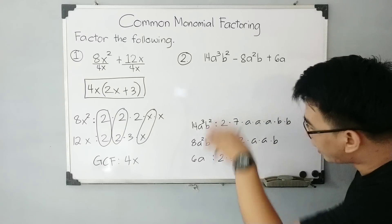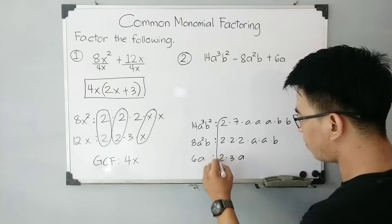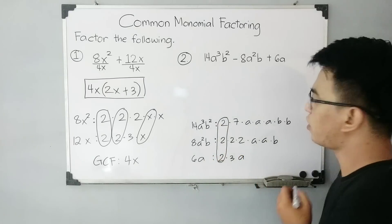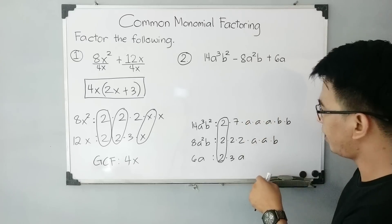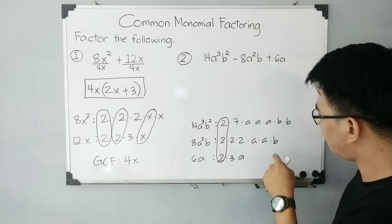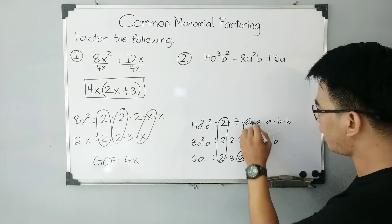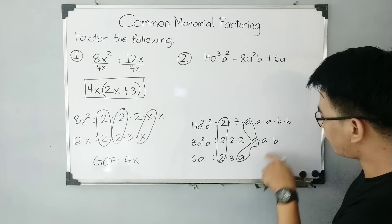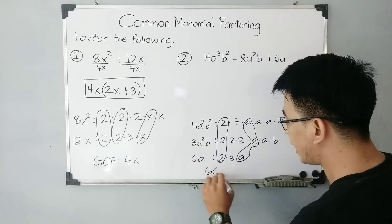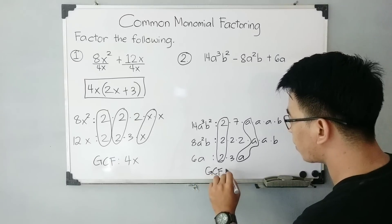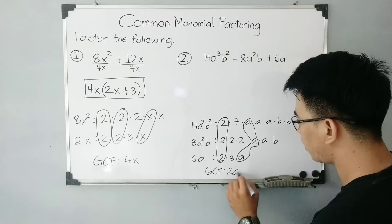We need to check what is common. They have one common prime factor, which is 2, and then for the variable, they have a common variable a. The variable b is not common to all three terms. That's why the GCF, or the greatest common factor, of these terms is 2a.